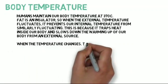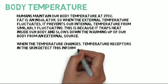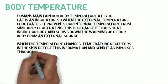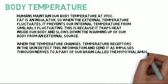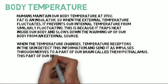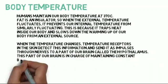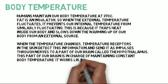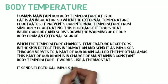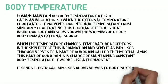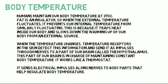When the temperature changes, temperature receptors in the skin detect this information and send it as impulses through nerves to a part of our brain called the Hypothalamus. This part of our brain is in charge of maintaining constant body temperature. It works like a thermostat, sending electrical impulses along nerves to body parts that help regulate body temperature.